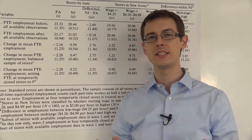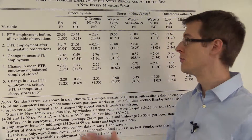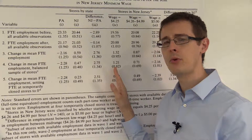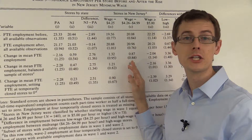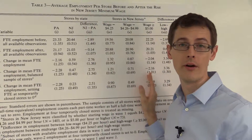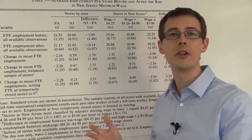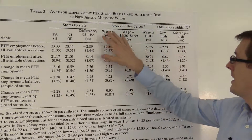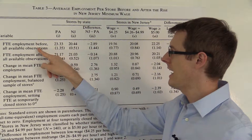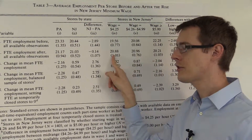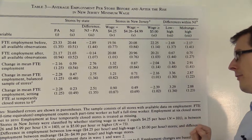They take all the fast food stores in New Jersey and look at what they were paying employees before the minimum wage was increased. They split them into groups: low-wage stores where most employees were getting paid the minimum wage, mid-range stores where employees earned a bit more than minimum wage, and high-wage stores paying $5 or more. For just the stores paying the minimum wage before, full-time employment was about 19.5 people before and increased to about 21 after the policy change.